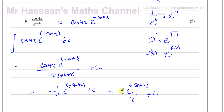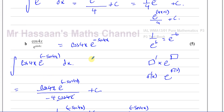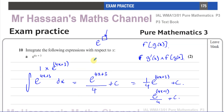Both forms of writing the answer are fine. So that's how you tackle such a question — think of the main function and check that what's inside it, when differentiated, is of the same order as what multiplies the whole function. This is all about reversing the chain rule, which is very important for P3. Other questions from this paper or this topic of integration from P3 will be in the playlists. You can subscribe to my channel by clicking the link. Thank you for watching — see you soon.